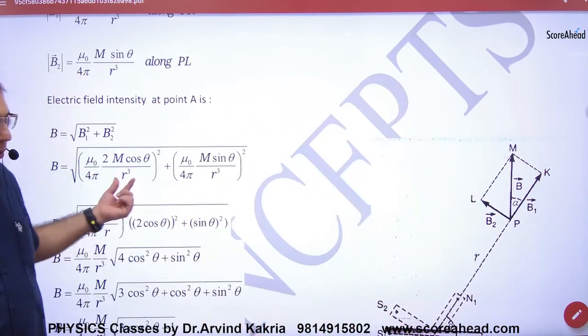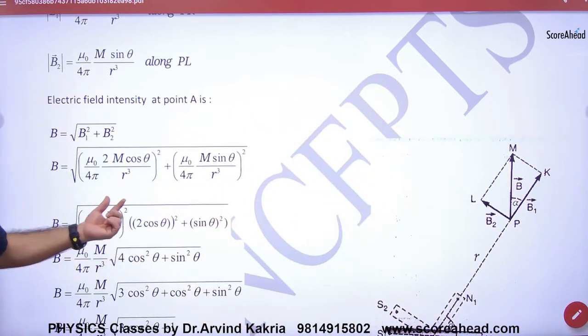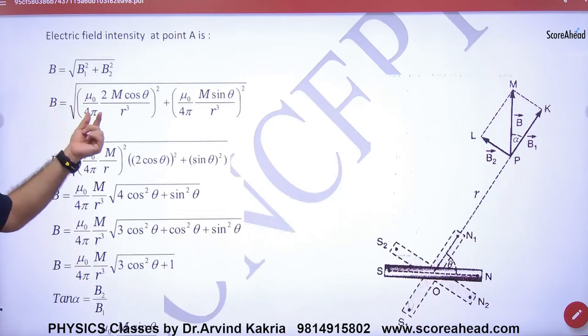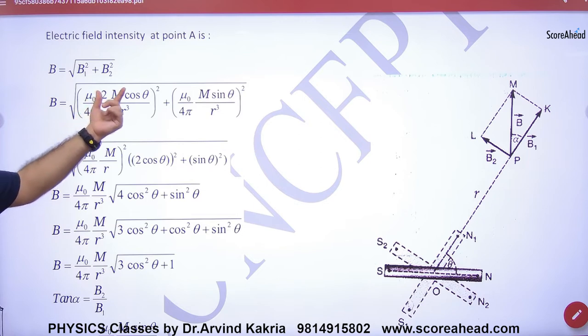B-axial square, B-equatorial square. We have proved it, it's the same. Just take the electrostatics expression, the same thing we have done where P is M and μ₀/4π. The same answer will come.